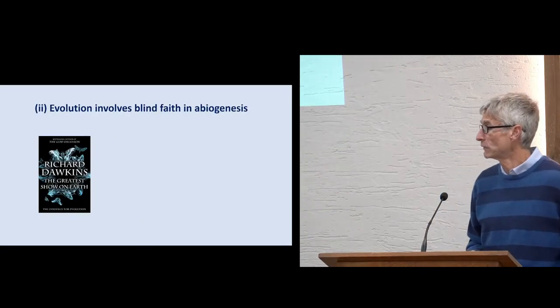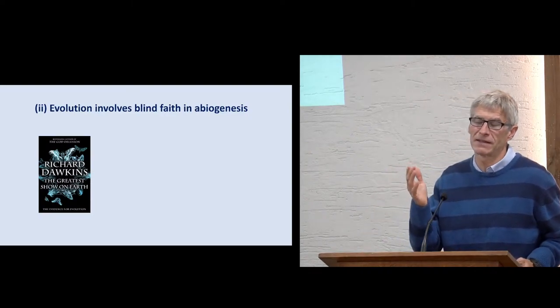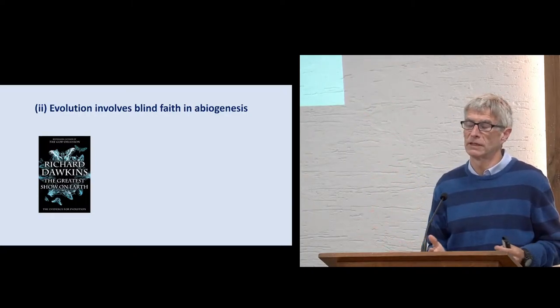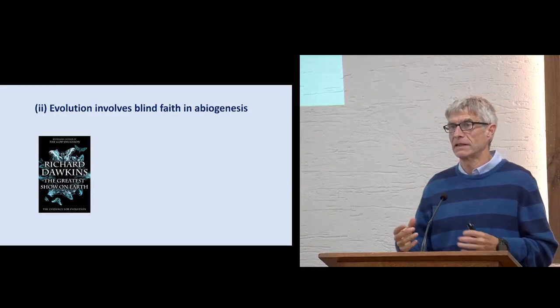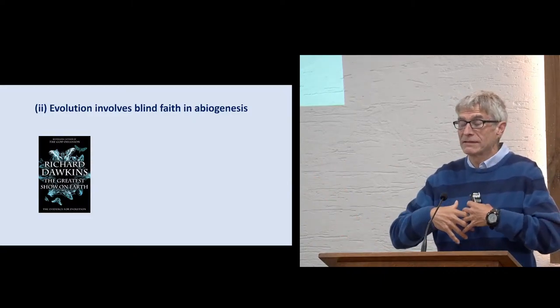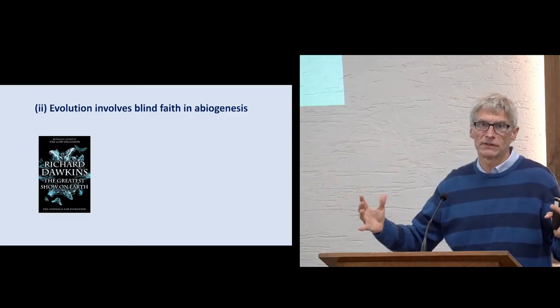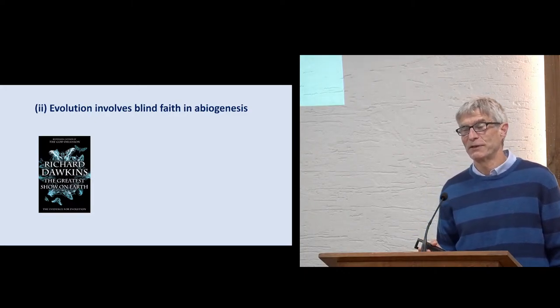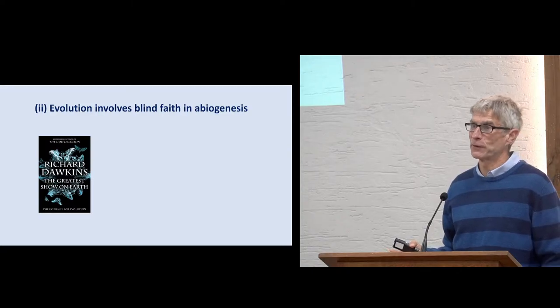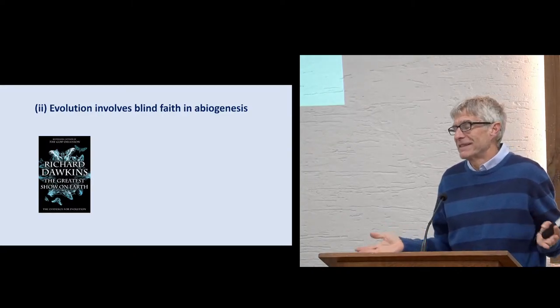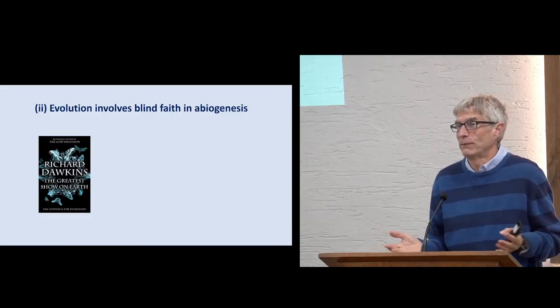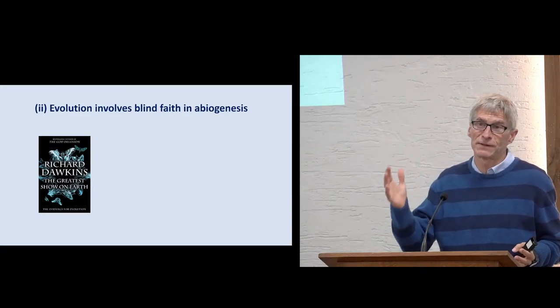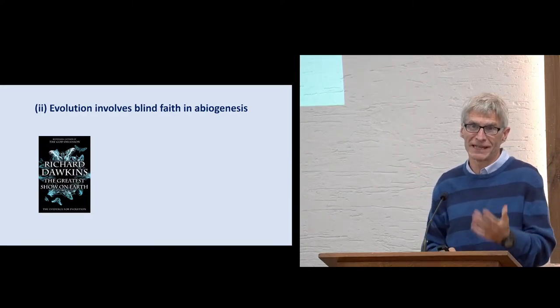Evolution involves blind faith in abiogenesis. What is abiogenesis? That is the theory that life could just jump out of a chemical soup, some primordial soup. So evolution teaches that life just came from, without any creator, it just jumped out of some chemical soup. Now I've discussed this with hundreds of academics and every academic I've spoken to has said there is no evidence for this whatsoever. And most academics I've spoken to have said it's a completely rubbish theory. Even professors of microbiology, the more senior you go, the more honest they will be.